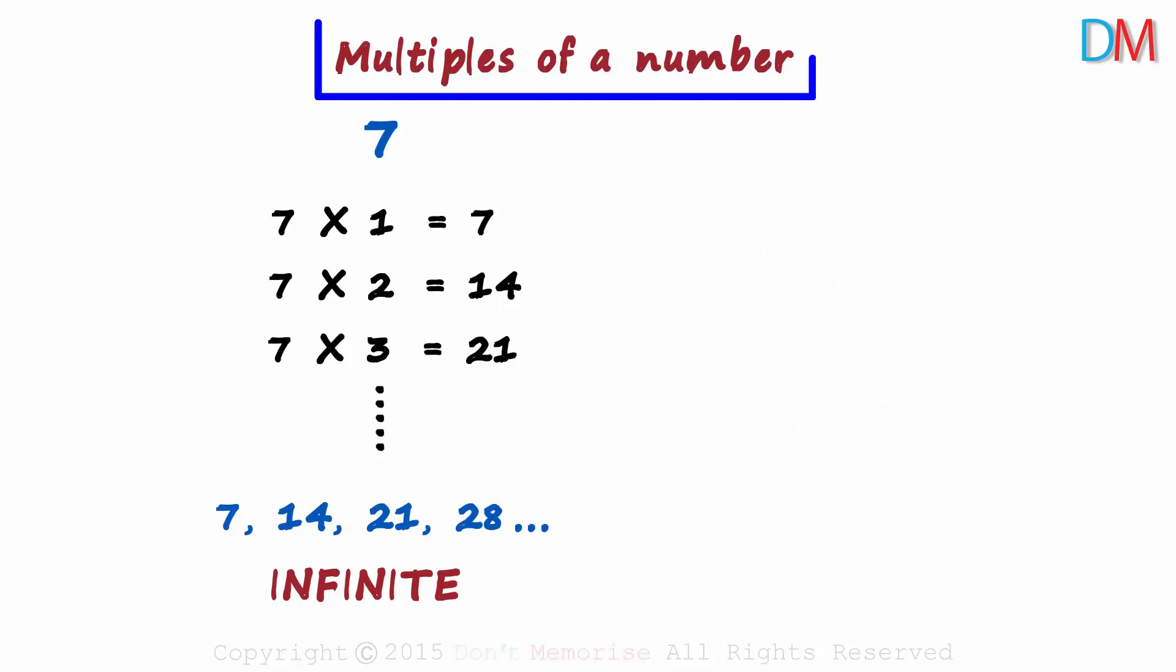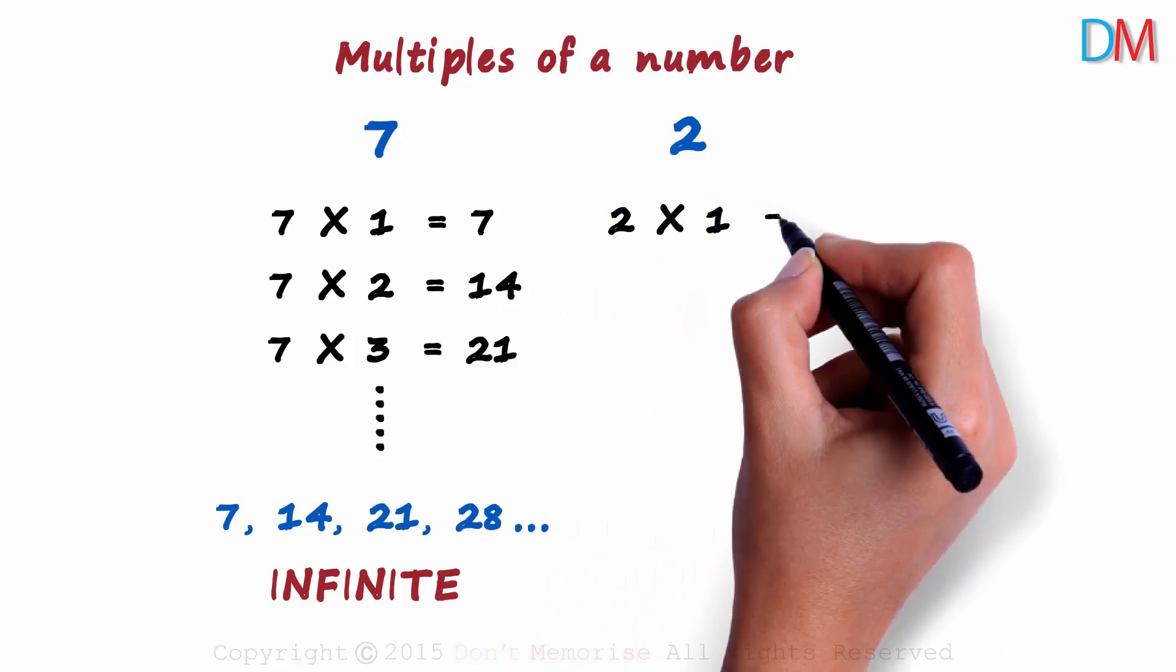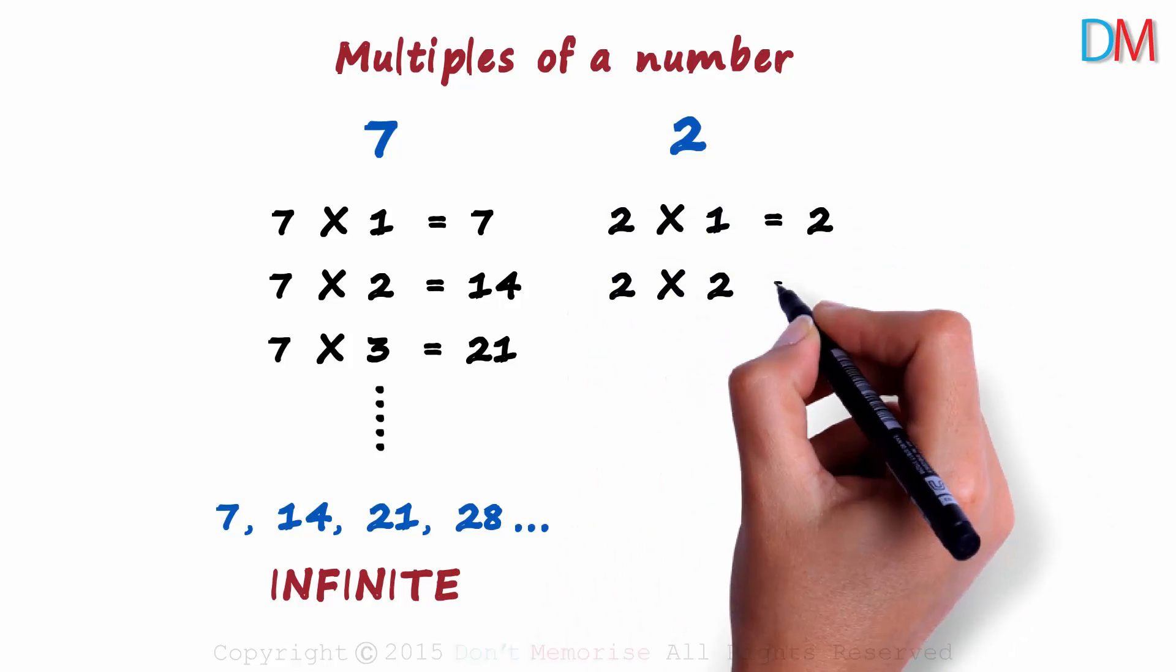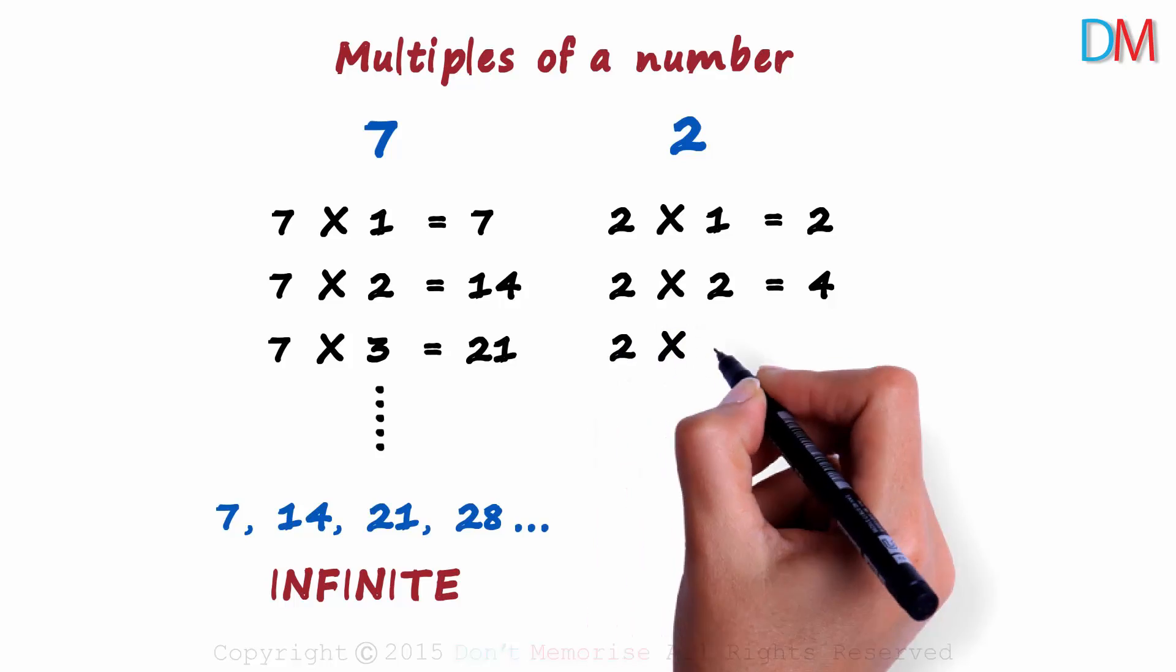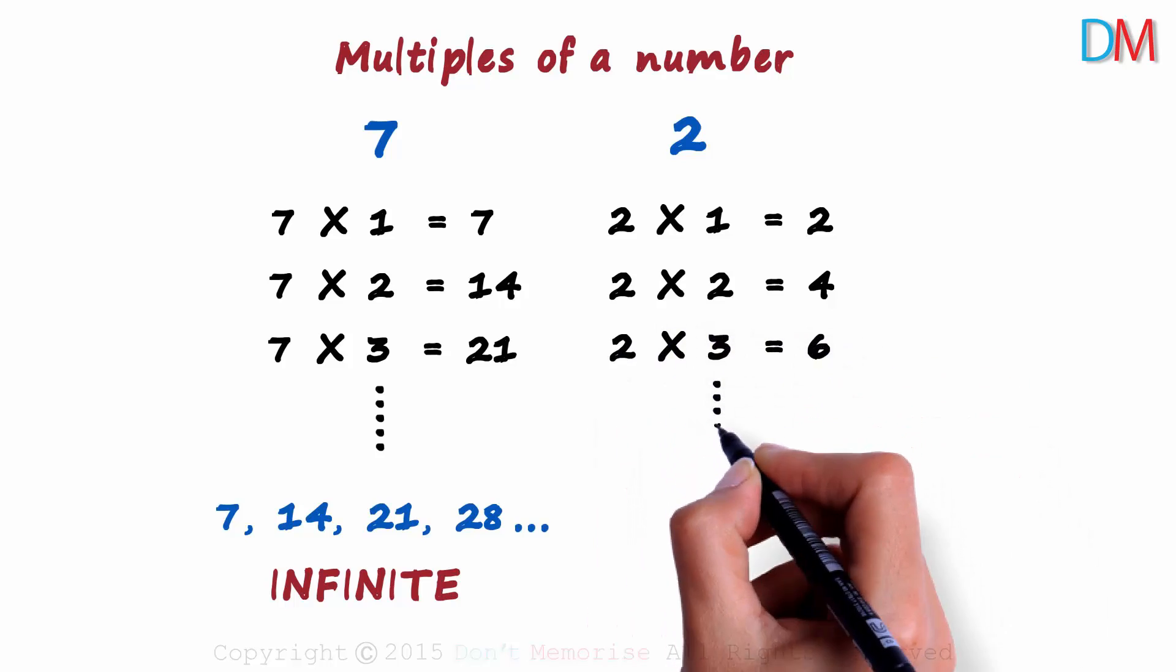The concept of multiples gives us a very important result. Let us find the multiples of 2. 2 times 1 is 2, 2 times 2 is 4, 2 times 3 is 6, and the multiples of 2 continue.